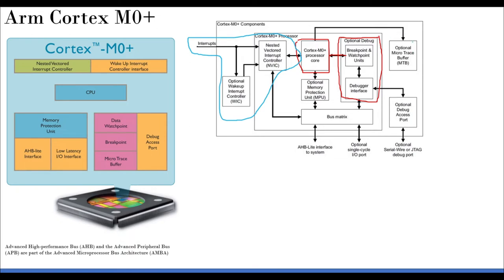There is also a trace buffer, which acts like a log — recording how the microprocessor behaved, similar to software logs passed to developers. This is not an integral part of normal operation and can be ignored for our purposes.